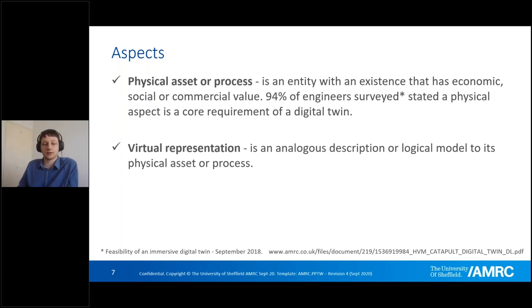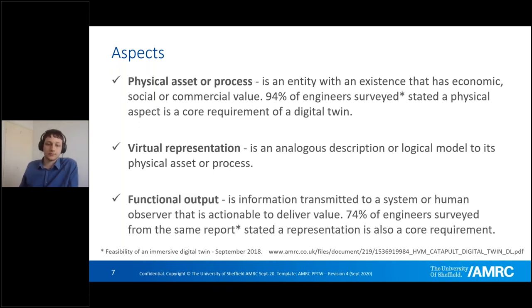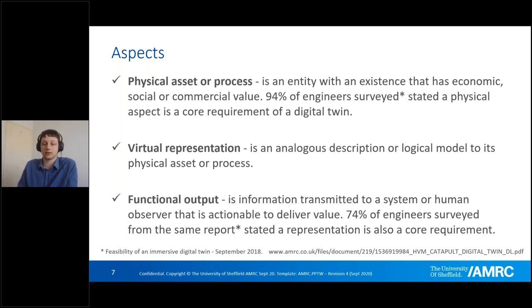The virtual representation is a way of understanding what's happening in the physical asset or process. You need a way of understanding the description and state information coming through — its logical model of that physical asset or process. Functional output is the last piece: yes, you have something physical, yes something virtual, bridging the gap with live state information. But we want to make sure something is actually done with it — whether transmitting it to another system, i.e., another Digital Twin, or a human observer via a dashboard. 74% of engineers said these representations — these early adoptions of Digital Twins — will be a core requirement to represent what is happening for dashboards.